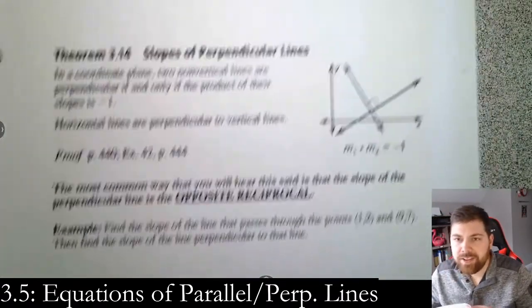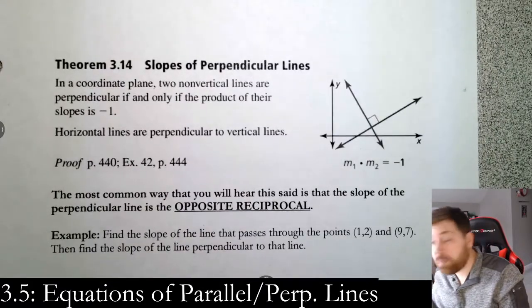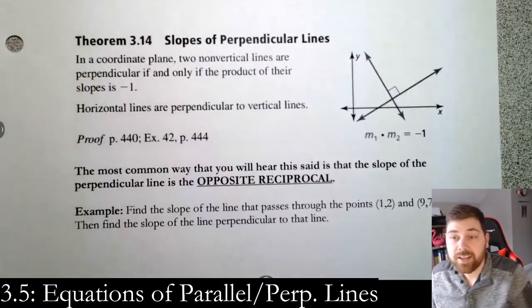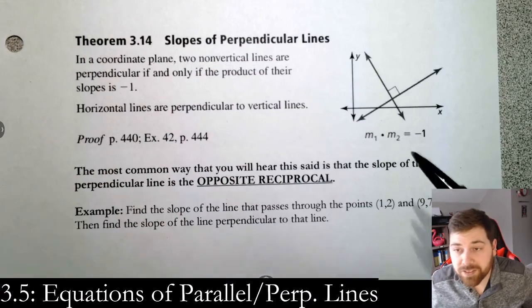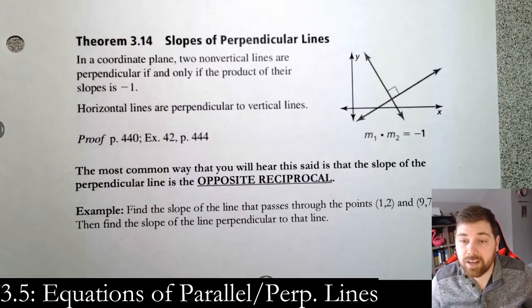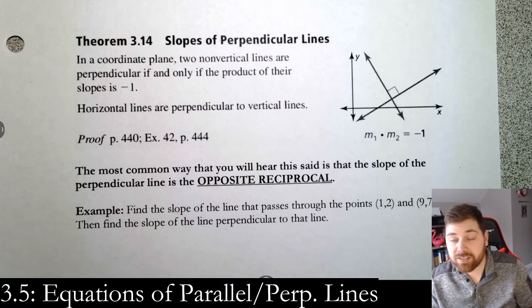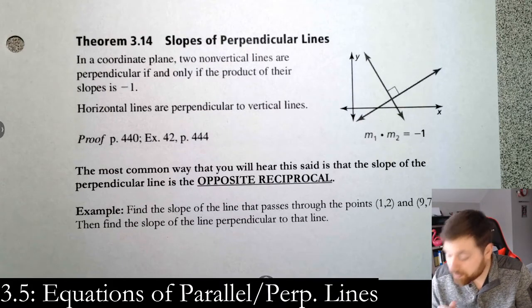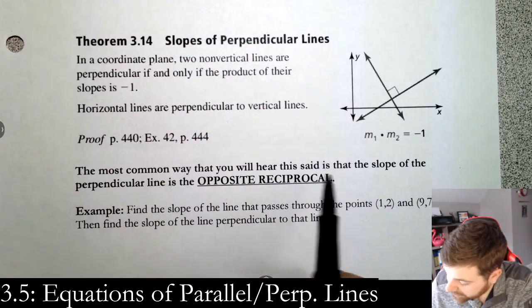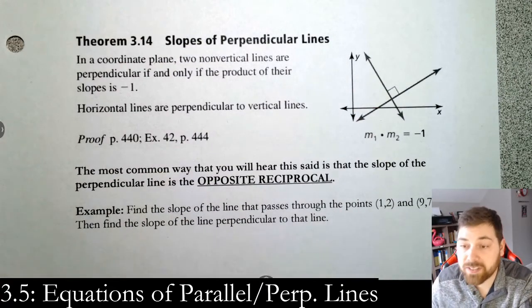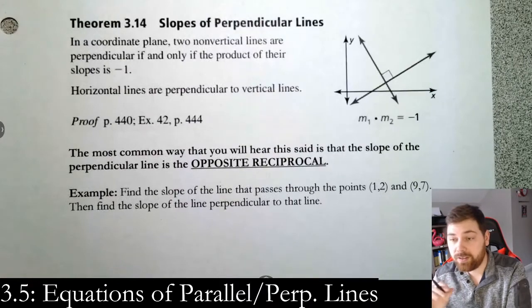On the same wavelength, we have the theorem about the slopes of perpendicular lines. What it says is that two non-vertical lines are perpendicular if and only if the product of their slopes is negative 1. Horizontal and vertical are obviously perpendicular. What this means is the slope of perpendicular lines is opposite reciprocals of one another.